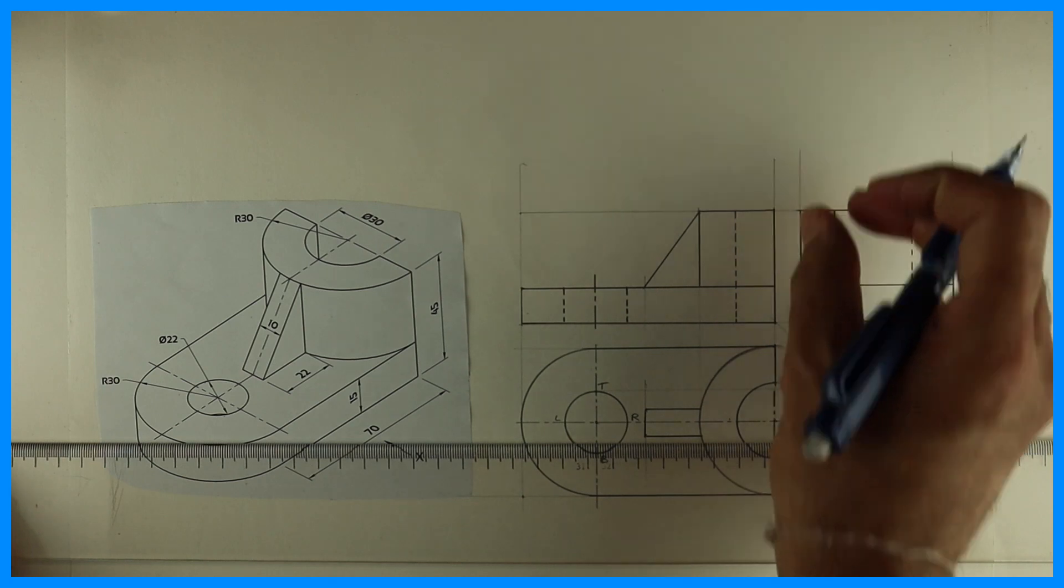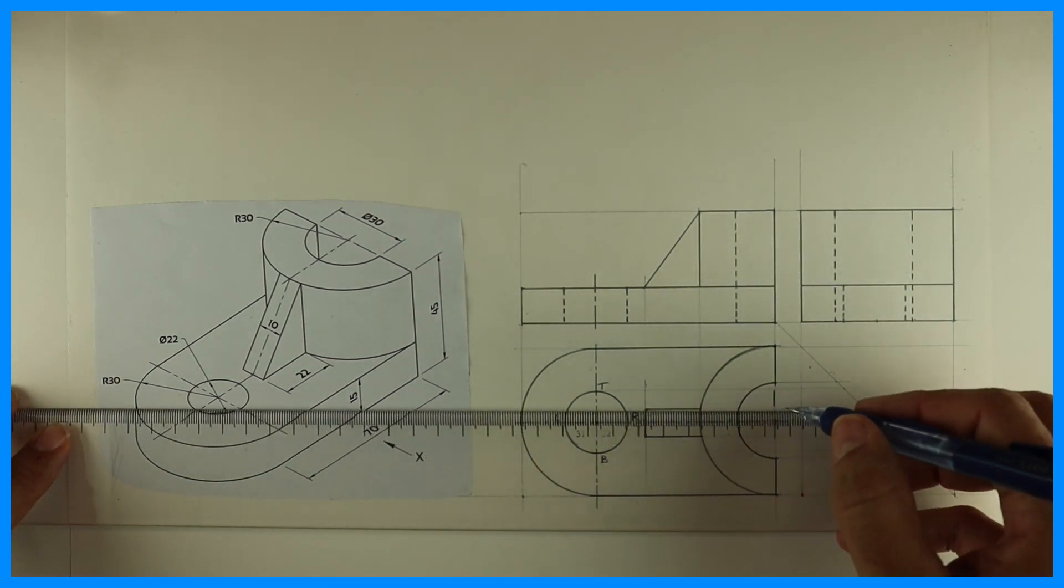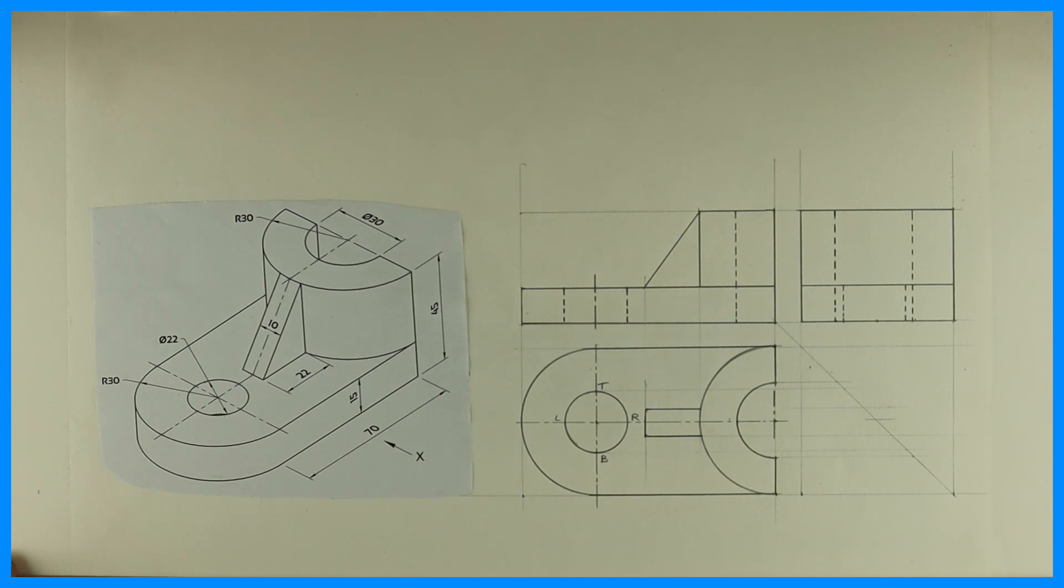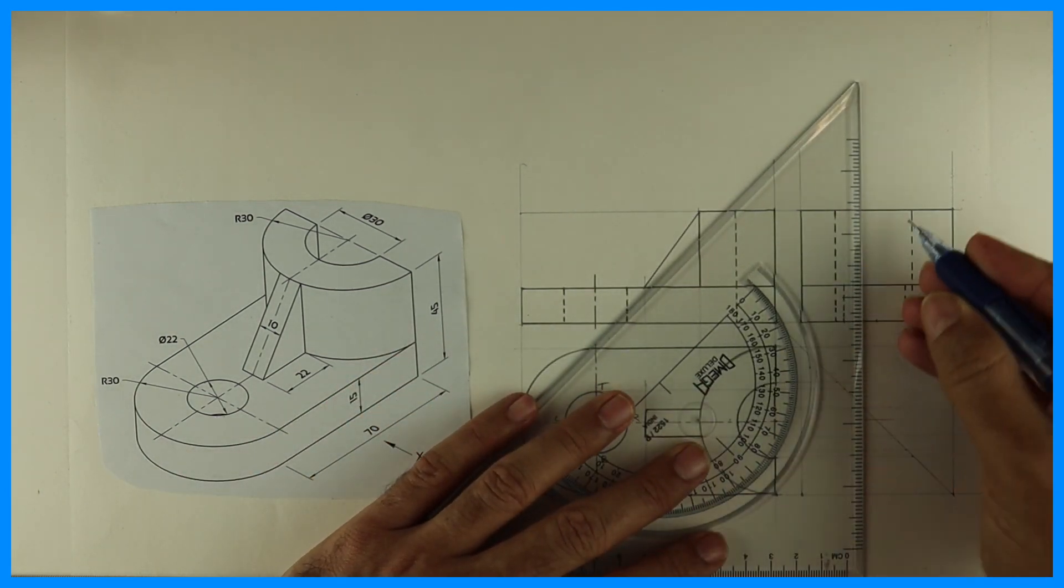After this we can draw this rectangle. It will appear as a rectangle. See, it's a slope but in top view it is appearing as a rectangle. In side view also it will appear as a rectangle. So that we are drawing.